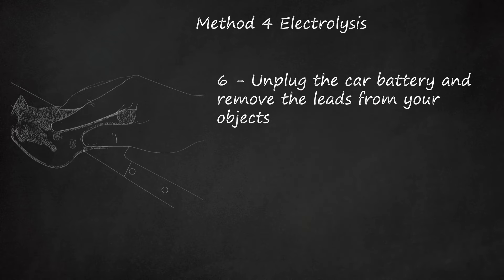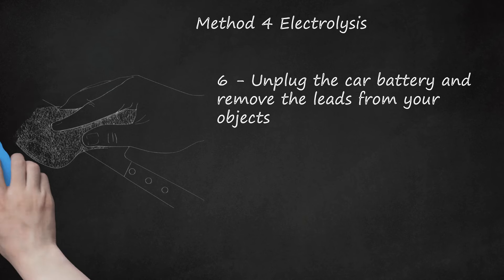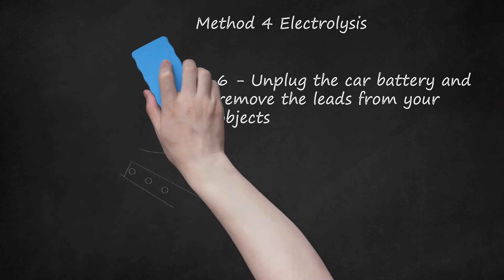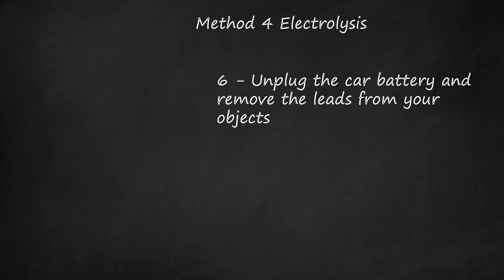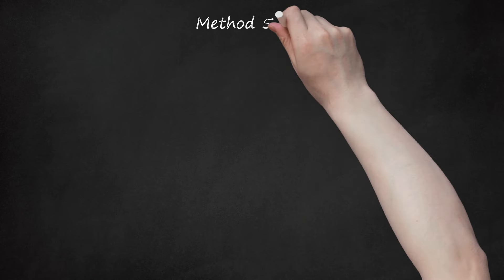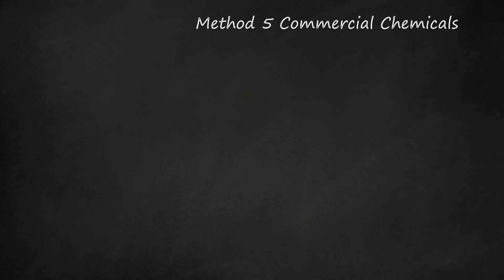Sixth, unplug the car battery and remove the leads from your objects. When taken out, your rusted object should be rust-free, but still in need of some cleaning. Use a Scotch-Brite pad to remove any sludge on the object and a bristled brush to clean those harder-to-reach spots.